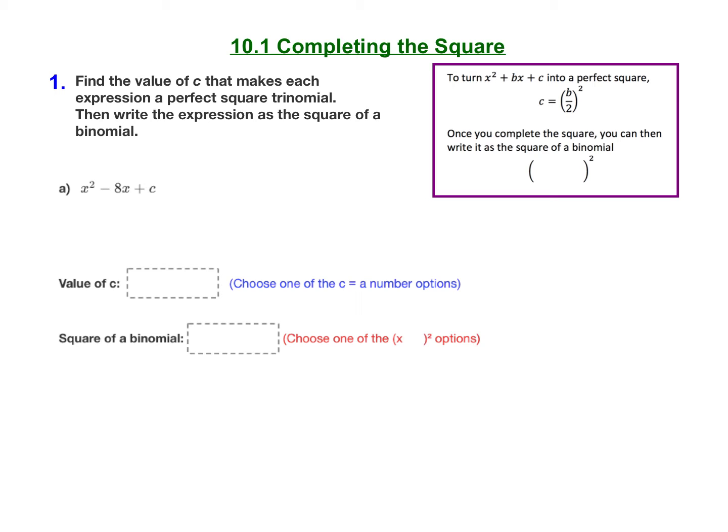Let's get started here with question number one, which comes from lesson 10.1 on completing the square. We want to find the value of c that makes each expression a perfect square trinomial, then write the expression as the square of a binomial.